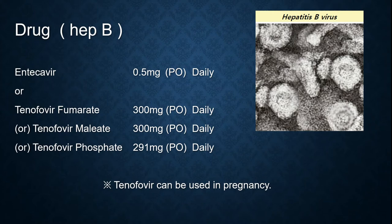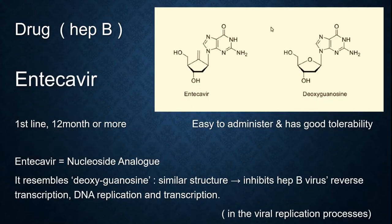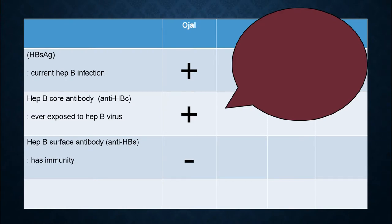Note that tenofovir can be used in pregnancy. Entecavir is the first-line treatment and is used for 12 months or more. The surface antigen result means that the person currently has a hepatitis B infection. The second marker is the core antibody, which shows whether the person has immunity or not.